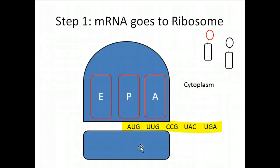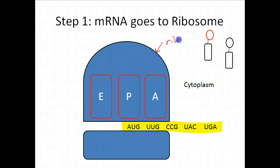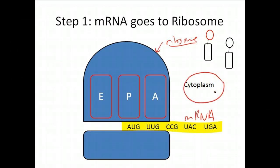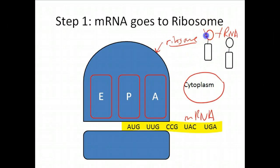The first step of translation is that this messenger RNA needs to be brought to the ribosome. So you have your ribosome here, and this messenger RNA basically goes to the ribosome and binds with it. This is occurring in the cytoplasm where the ribosomes are found. You can see the tRNAs in the distance — they're also in the cytoplasm, bringing amino acids to the ribosome, and they will play a critical role in the second step.